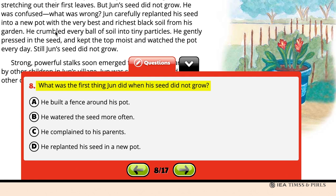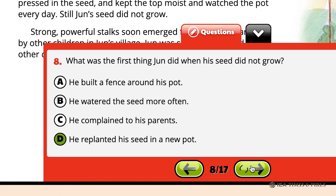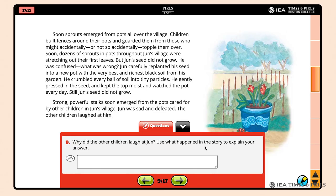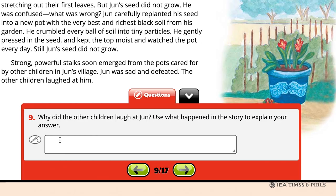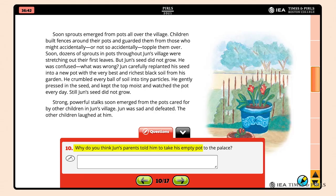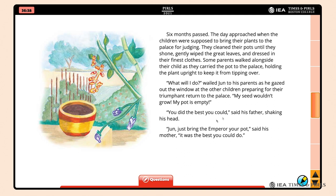The last question about this page asks why the other children laughed at Jun, using what happened in the story to explain the answer. To receive full credit for Question 9, students need to provide a reason and support it — for example, his seeds didn't grow and theirs did. Students should then advance to the next page to answer Question 10: Why do you think Jun's parents told him to take his empty pot to the palace? Students need to type a response similar to: He did the best he could.